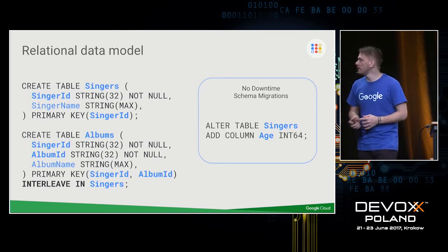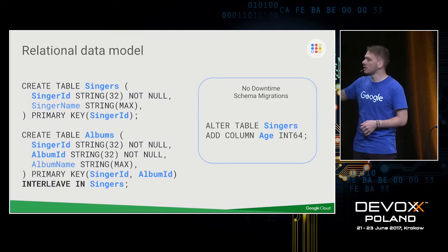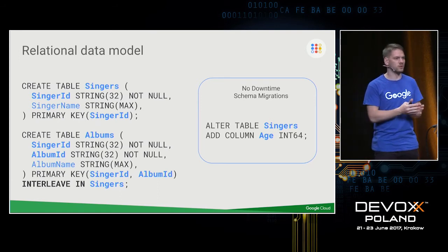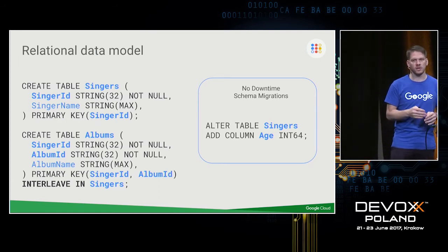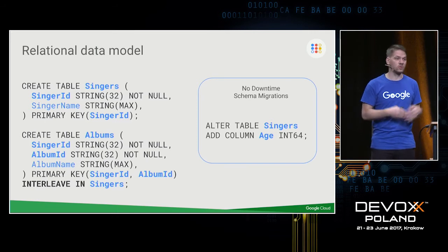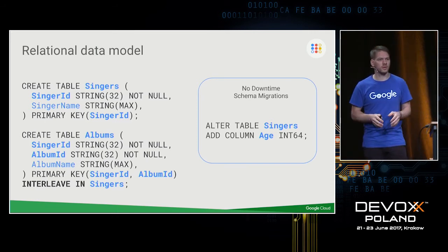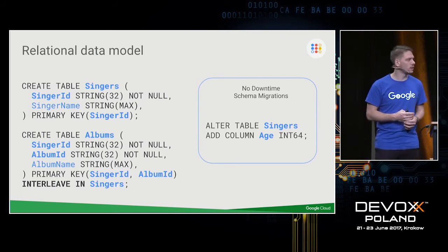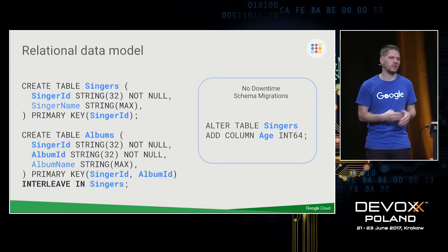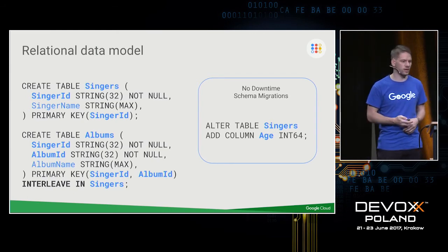Another very important feature is support for no-downtime schema migrations. You can change string max lengths, add columns, or delete columns. Of course there are bounds — you cannot change the type of a column, for instance. Schema updates are transactional; they receive a timestamp which you can use in your applications to accommodate the schema change.